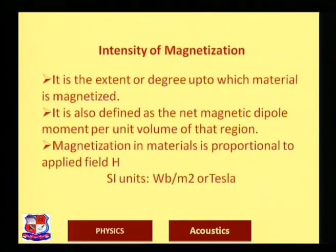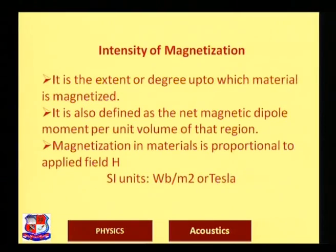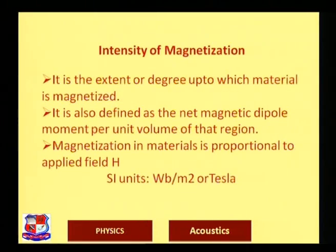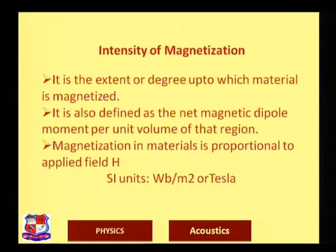Intensity of magnetization is the extent or degree to which a material can be magnetized. It is the strength of the external magnetic field that can penetrate through the material to magnetize it. It is defined as the net magnetic dipole moment per unit volume. It is proportional to the external magnetic field and also an internal property of the material. Its unit is Tesla or Weber per meter squared.